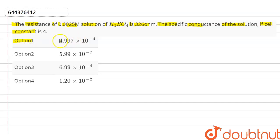Option first: 4.997 into 10 to the power minus 4. Option second: 5.99 into 10 to the power minus 7. Option third: 6.99 into 10 to the power minus 4. And option fourth is 1.20 into 10 to the power minus 2.